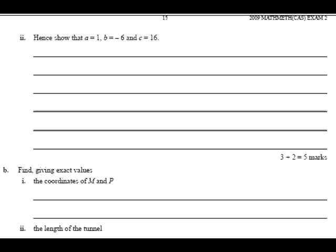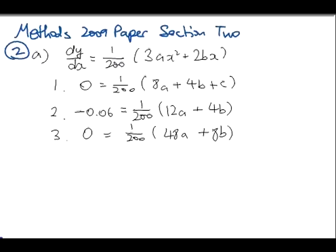What to look out for? They've given you three clues. There's three equations. They've set things up quite nicely for you. Hard to get tricked, really. Second part. Hence show. Hence show. a equals 1, b equals negative 6, c equals 16. Okay. So, basically, they're going to ask you to solve these equations.